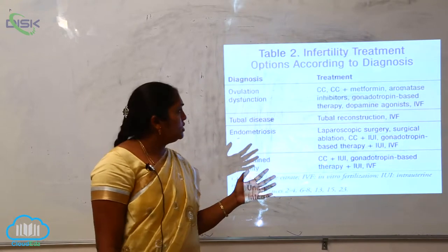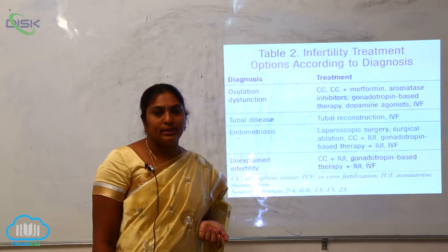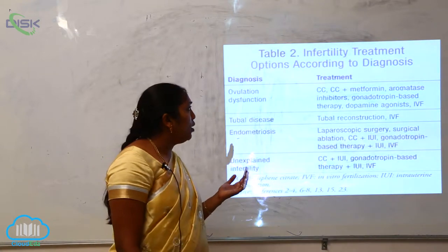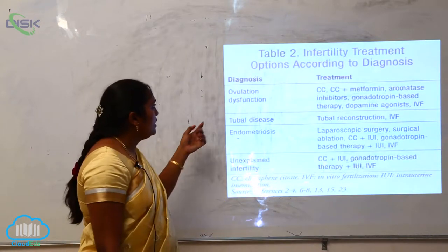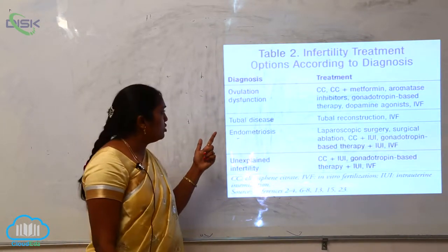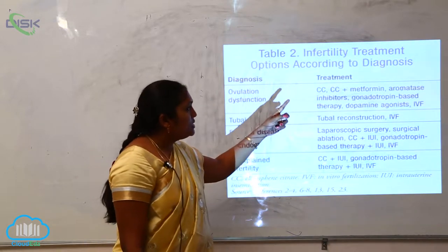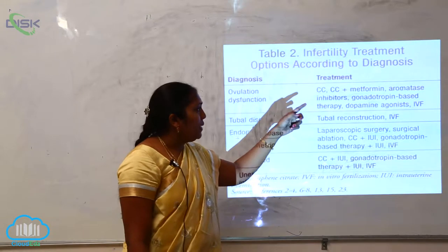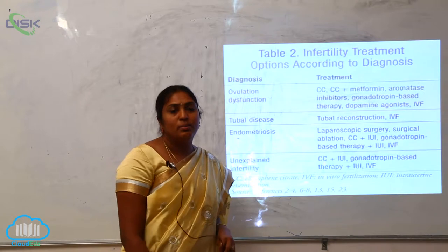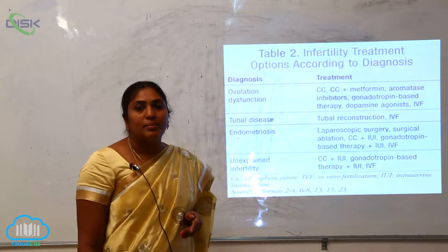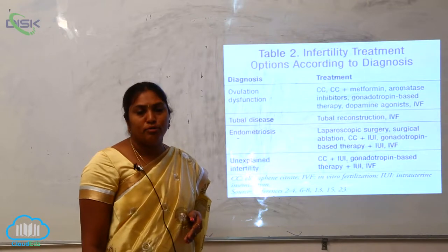Infertility treatment options according to diagnosis. We will look at what is meant by infertility and the different options for diagnosis and treatment. The first diagnosis is ovulation, and the treatments for ovulation include CC, CC plus metformin, and aromatase inhibitors. These are inhibitors which stimulate the female reproductive system to commence the process of ovulation.